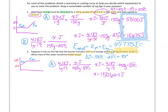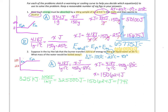Next, we find how much energy is left for boiling. We convert 325 kilojoules to 325,000 joules, then subtract the 150,480 joules needed to raise the temperature. That leaves 174,520 joules available for the phase change.